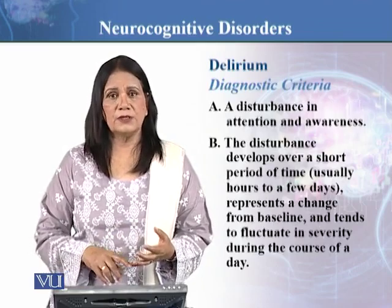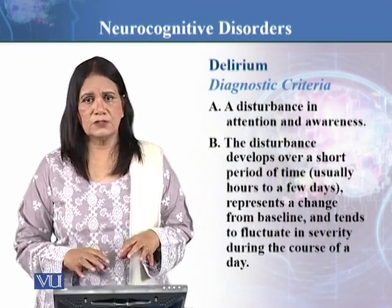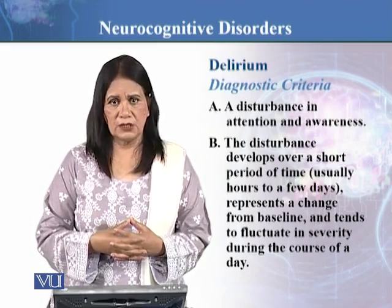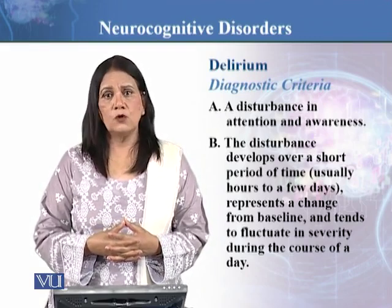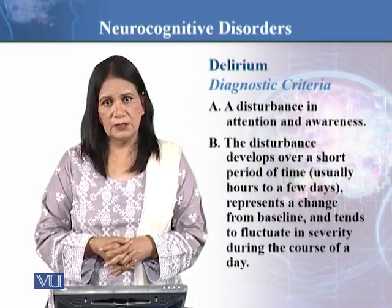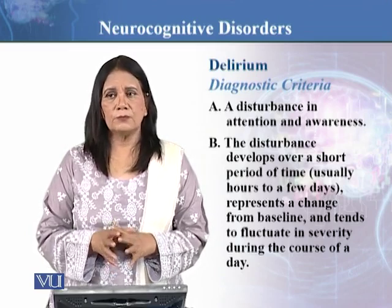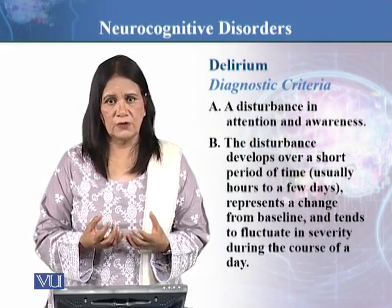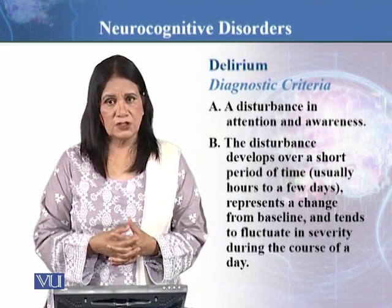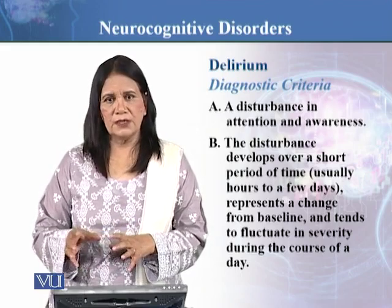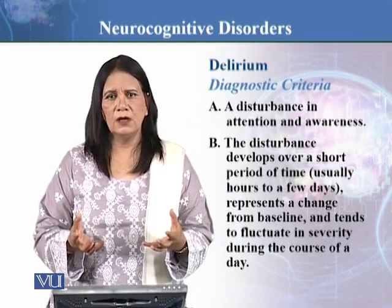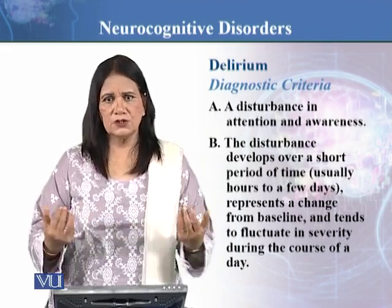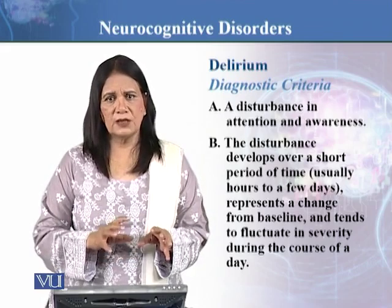Now we look at delirium, which as we have seen is the beginning point, after which other neurocognitive functioning effects come to be seen. So what is the diagnostic criteria of delirium? The first criterion is a disturbance in attention and awareness — it is actually a confused state of mind. The person is not able to attend or seems unaware of what is happening around them. This disturbance develops over a short period of time, usually hours to a few days.